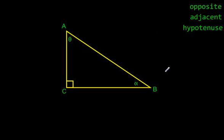Okay folks, we're going to start looking at something called trigonometry. In trigonometry — with this kind of trigonometry we're doing today — we're going to be dealing with triangles that are right angles. They have a 90 degree angle.